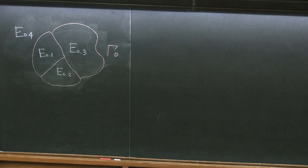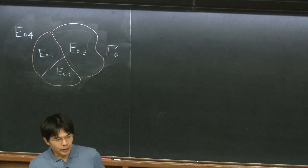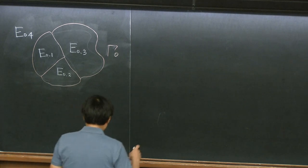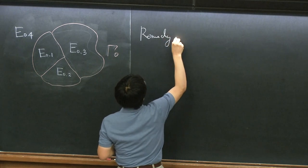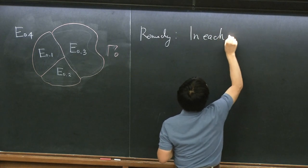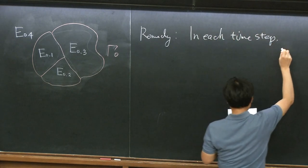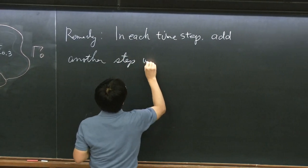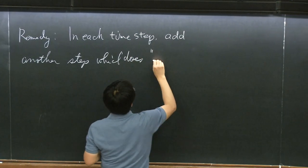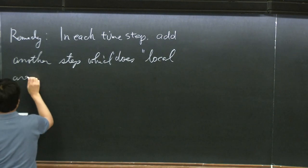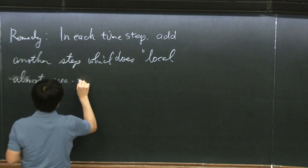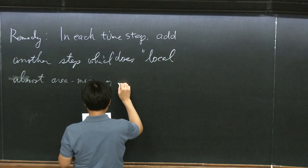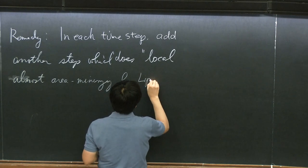There could be some crazy things happening at a smaller scale, and as epsilon goes to zero, this may cause some serious problems. To remedy this situation, what I'm going to describe today is that you add another step besides this motion by mean curvature. The remedy is that basically in each time step you add another sort of step, which does some kind of local area minimizing — almost area minimizing — but minimizing not by diffeomorphism, but by Lipschitz map, which is very important.